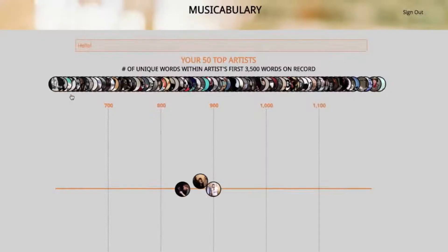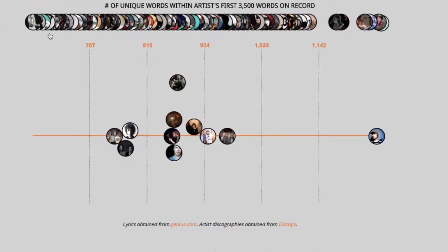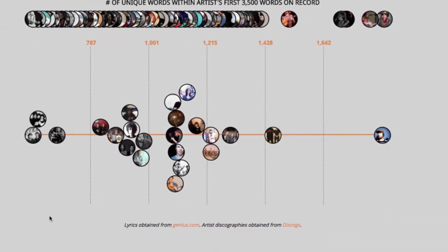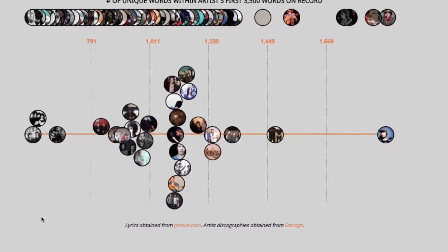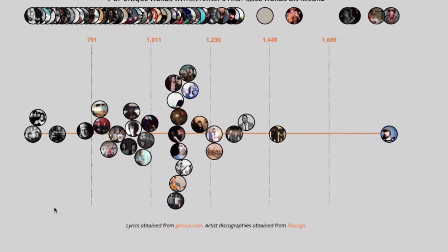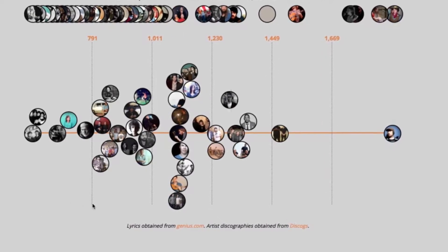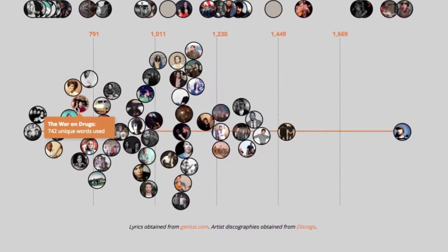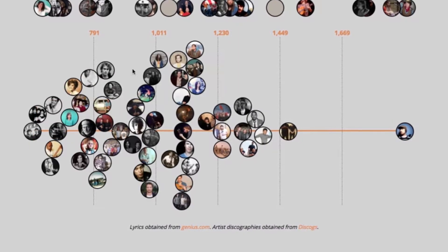It essentially goes through and figures out what your top artists are using your Last.fm data. Then for each of those artists, it goes and grabs their lyrics and calculates a score.